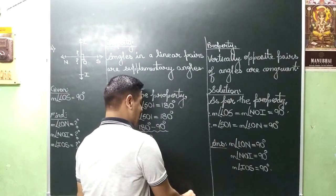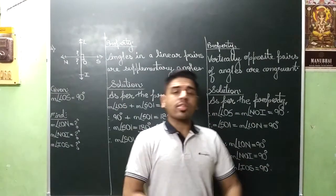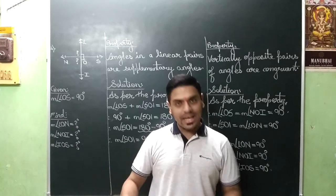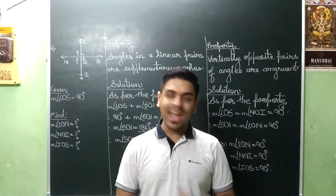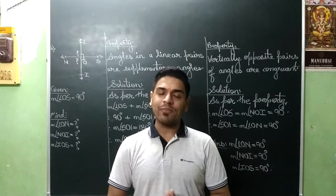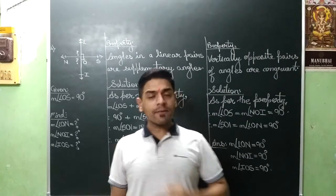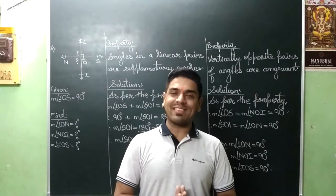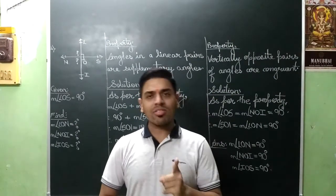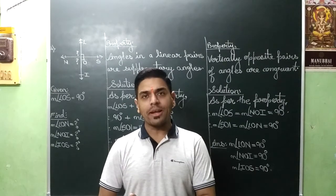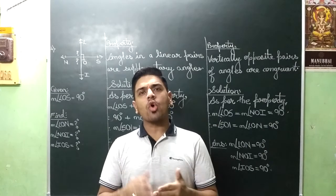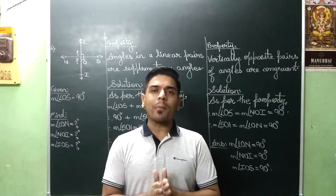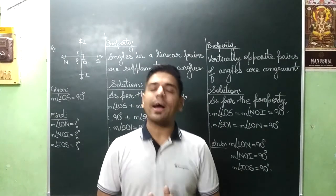So by this, we have four sums based on linear pair and vertically opposite angles in a mixed form complete. Now there are two properties in this chapter. One is the 6th property and one is the 7th property. If I tell you, you will know all properties from the 6th property.